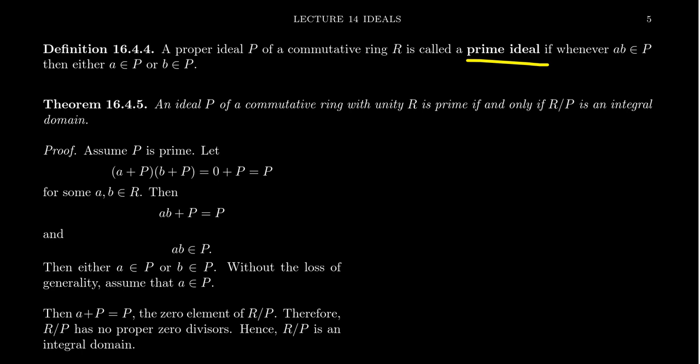If whenever the product AB is found inside of the prime ideal P, then it must have been true that the factor A was in the prime ideal or B was inside of it. So anytime a product is inside the ideal, one of the factors, not necessarily both, but at least one of the factors was inside of the prime ideal.